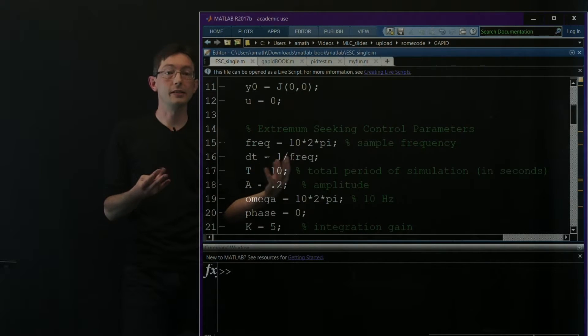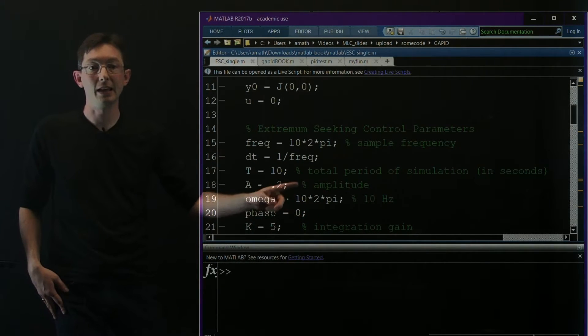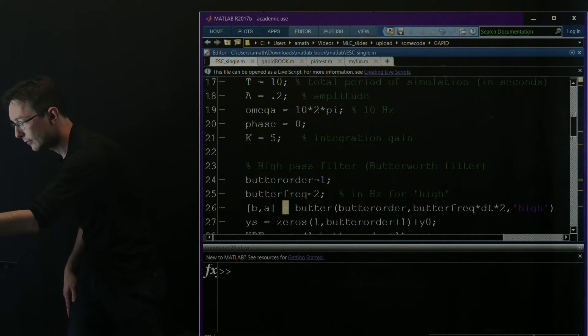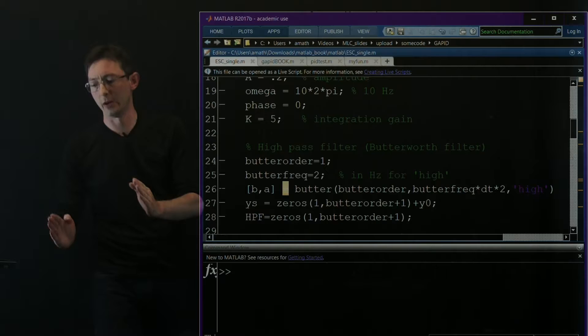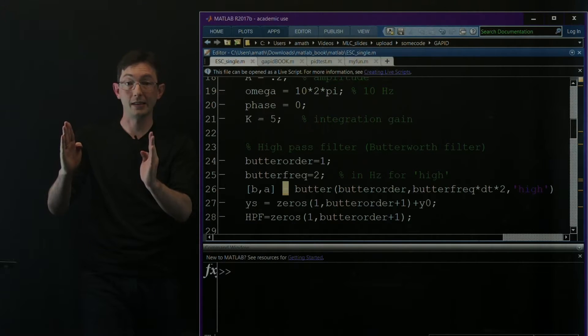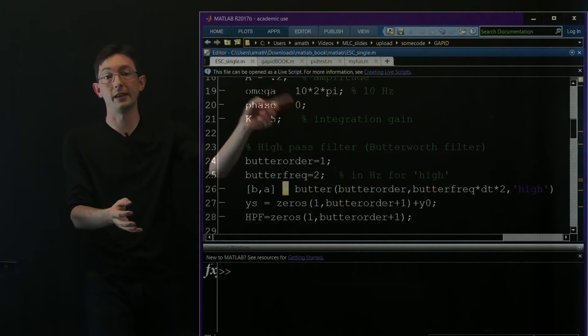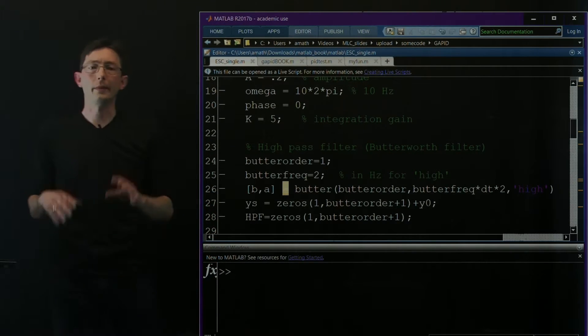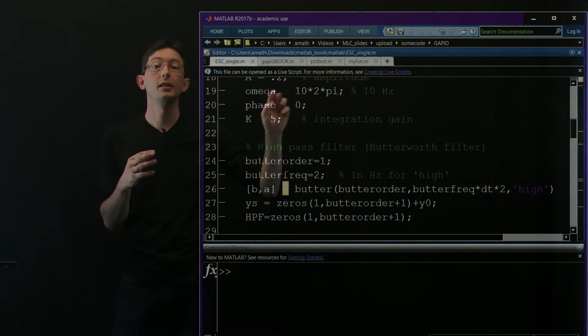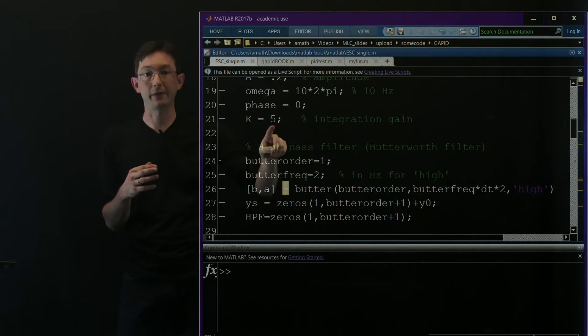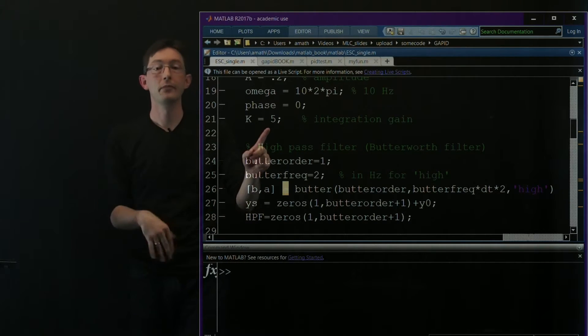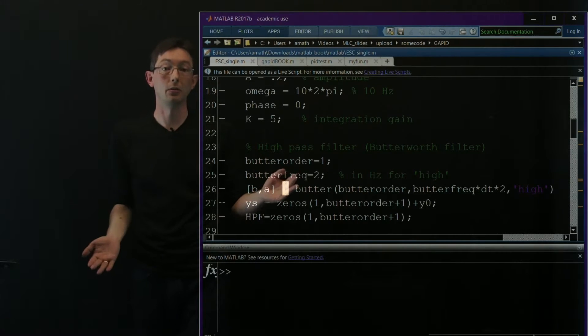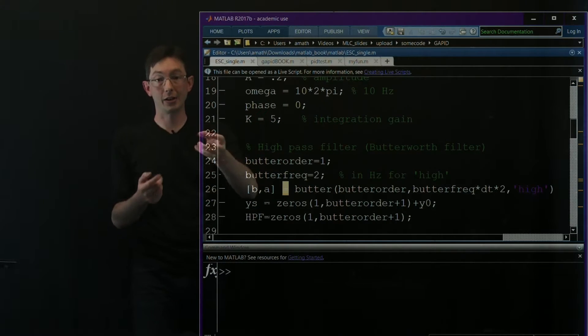I need an amplitude of my sinusoidal perturbation, big A here, so 0.2. And then what I need is an omega, which is my frequency in hertz. Omega is 10 times 2 times pi, or 10 hertz here. I'm going to use 0 phase—remember when I injected my sine wave and then I multiplied by that same sine wave there was that plus phi, that phase—I'm going to choose phase equal to 0 in this case. And I'm going to have an integration gain of 5 for my integrator. So I picked my oscillation frequency to be 10 hertz. I have an integral gain k equals 5. If I make this bigger or smaller I'll track faster or slower. If this gets too big your system will go unstable. If this is too small your system will track too slowly.